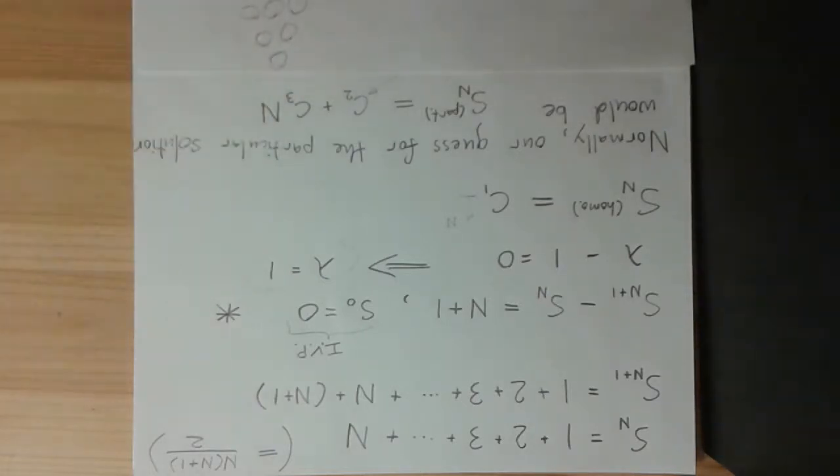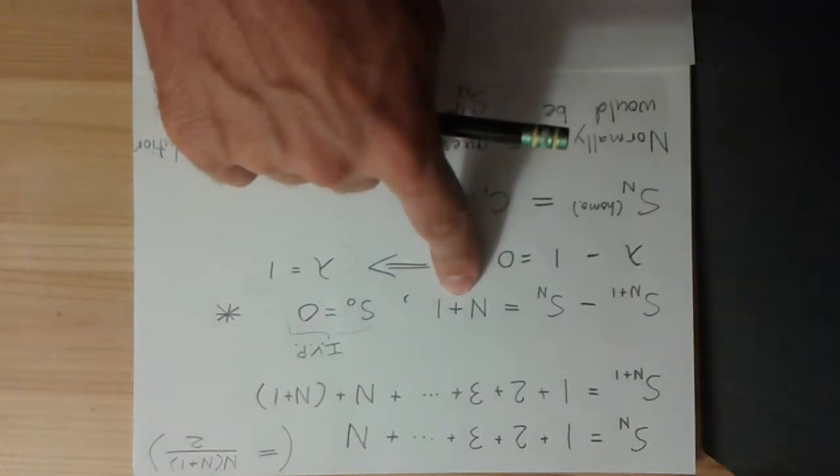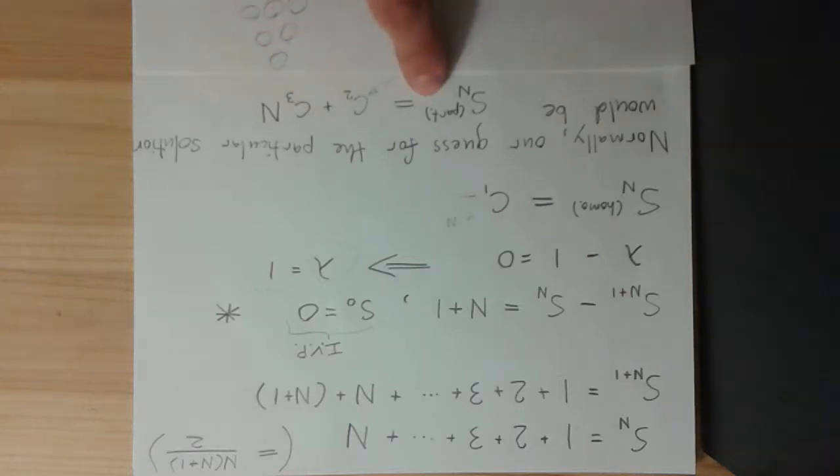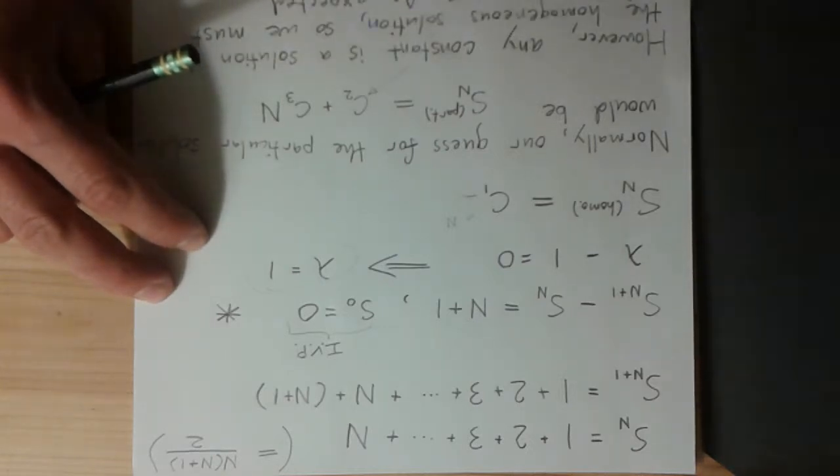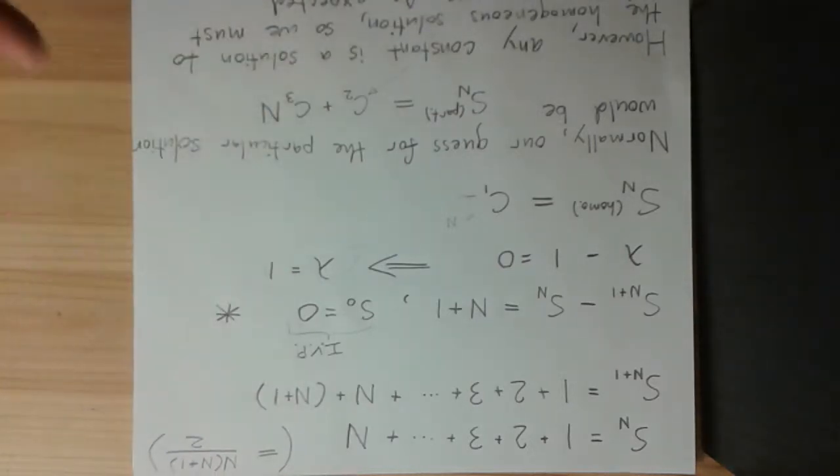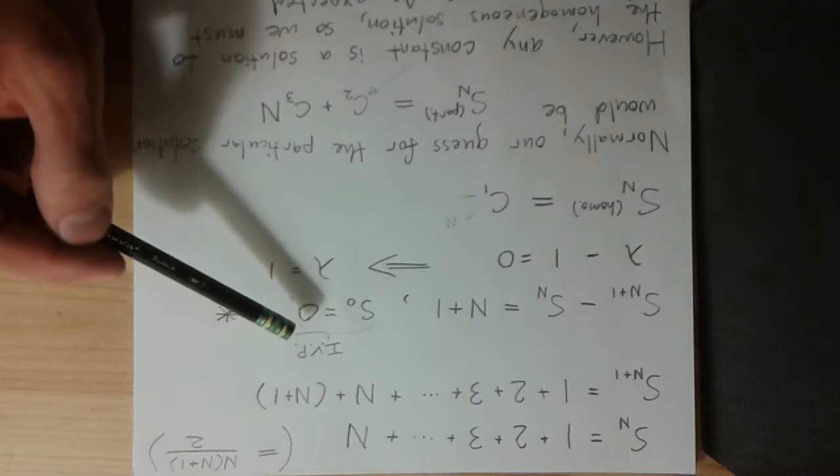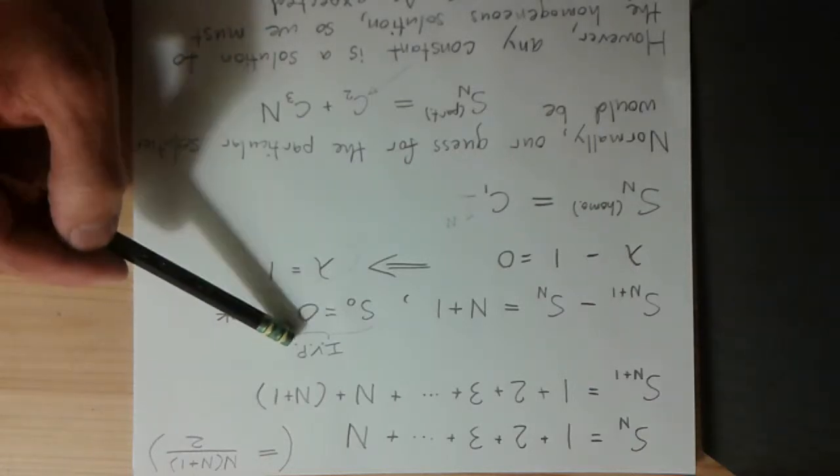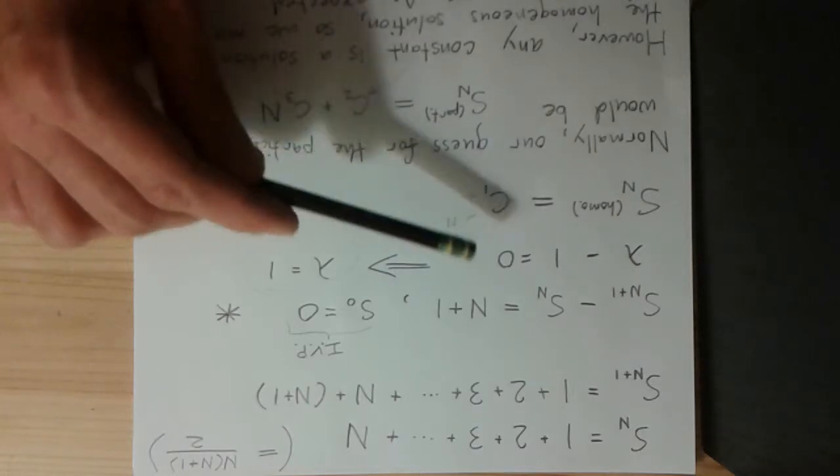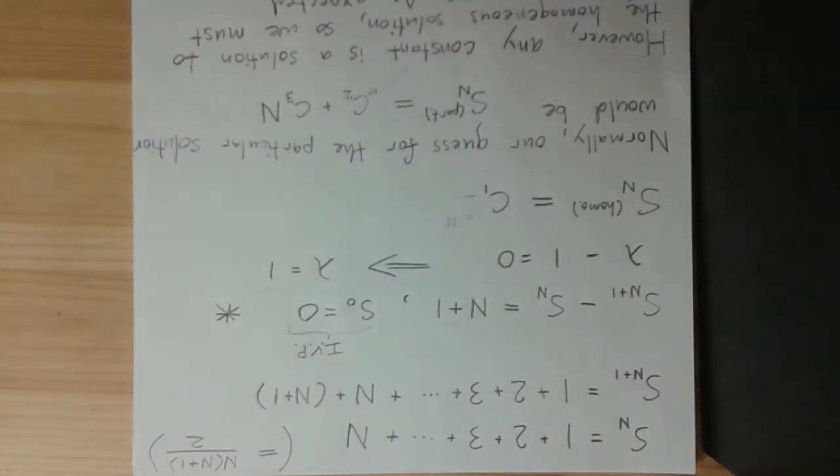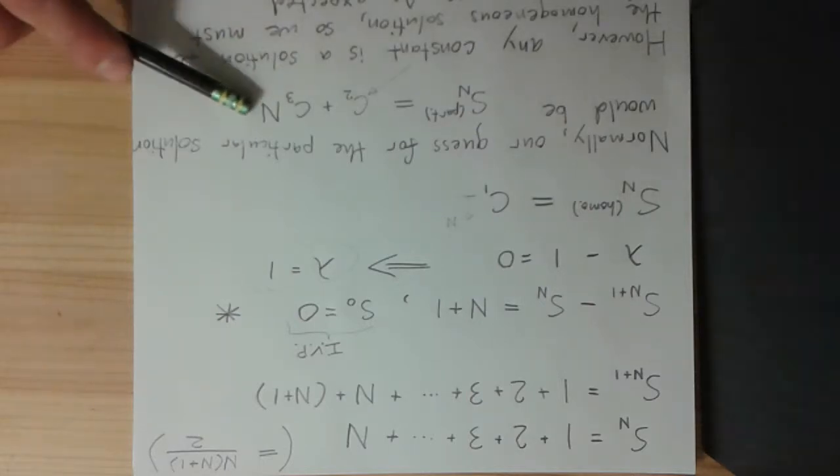So, from here normally, the guess for the particular solution would just be, well, we put a linear function in, so we expect to get a linear function out for the particular solution. But, there's a problem. In this case, our homogeneous solution is a constant. Of course, we have the initial value problem, but we're going to deal with that last. We know that any constant that you put in to this equation is just going to give you 0, and a constant was part of our guess. So, we have to refine our guess. This guess isn't going to work.